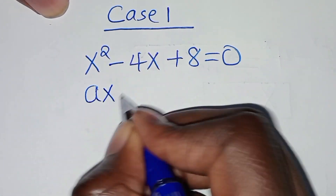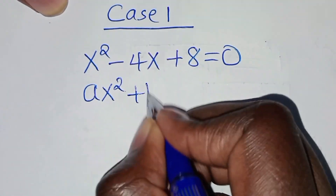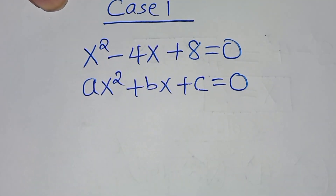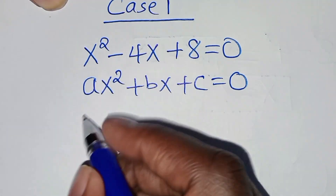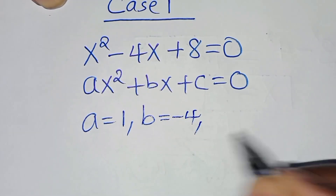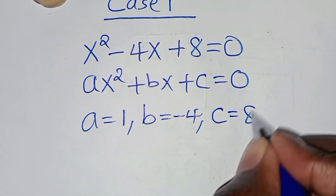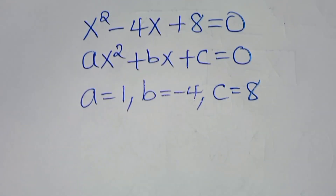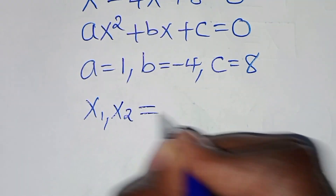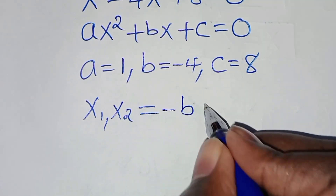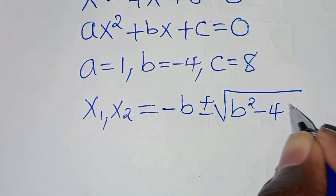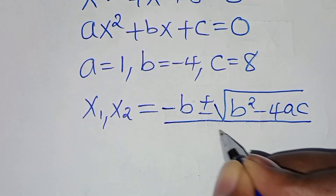This is a quadratic equation of the form ax squared plus bx plus c, this is equal to 0. From this quadratic equation here, a is equal to 1, b is equal to minus 4, and c is equal to 8. Now let's apply the quadratic formula to solve for x1 and x2. This quadratic formula is minus b plus or minus the square root of b squared minus 4ac, over 2 times a.